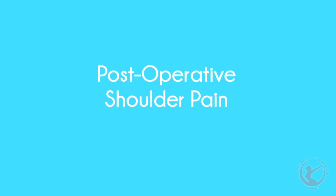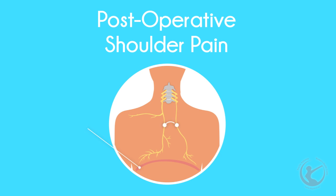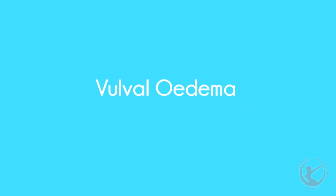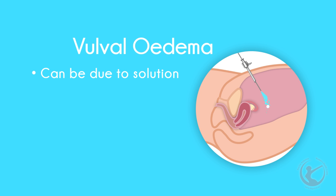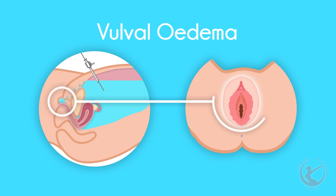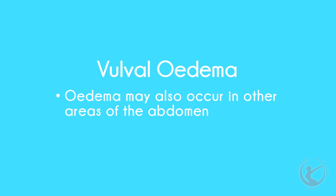Postoperative shoulder pain. Both the diaphragm and the shoulder tip are supplied by the phrenic nerve. Irritation of the diaphragm causes your brain to think you have pain in your shoulder tips. Vulval edema. This occurs especially in patients in whom adhesion barrier solutions have been used, with drainage into the vulval area being the cause. Edema may also occur in other areas in the abdomen dependent on the position in which you are lying, when the fluid gravitates towards those areas.